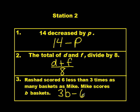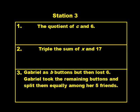On to station three. Again, we're doing the same thing. Go ahead and copy down your three problems, then solve them, and pause as you go. Number one for station three. The quotient of c and six. Number two, triple the sum of x and 17.